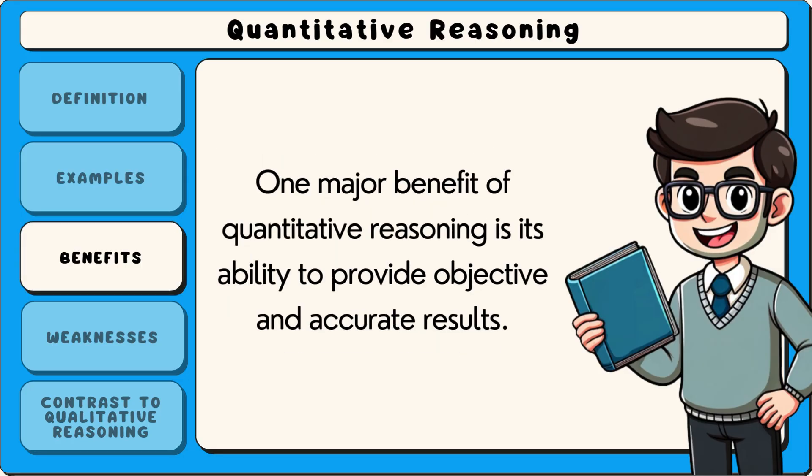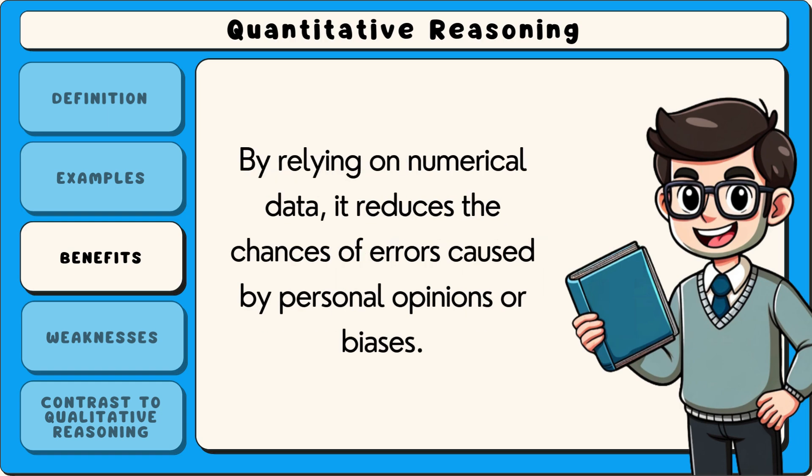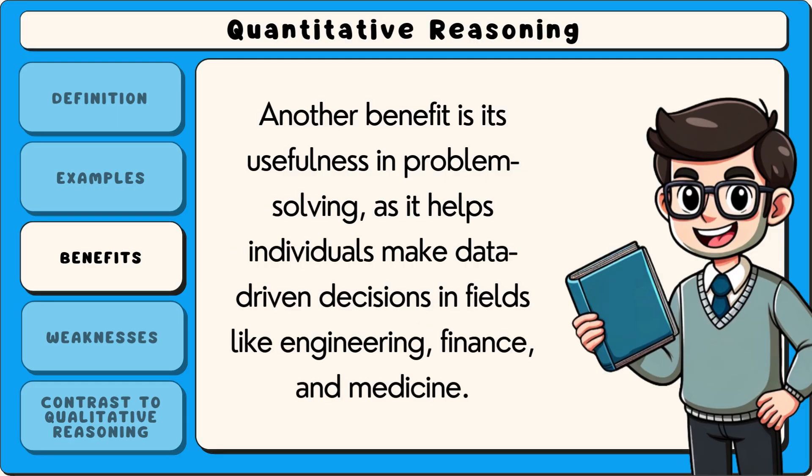One major benefit of quantitative reasoning is its ability to provide objective and accurate results. By relying on numerical data, it reduces the chances of errors caused by personal opinions or biases. Another benefit is its usefulness in problem solving, as it helps individuals make data-driven decisions in fields like engineering, finance and medicine.